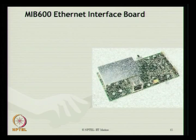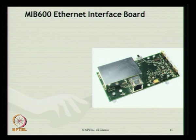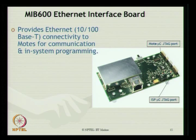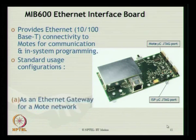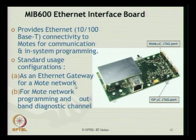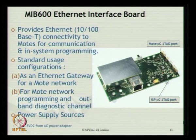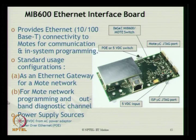The Ethernet interface board MIB 600 physically looks like this. It contains Ethernet 10/100 Base-T connectivity to motes for communication and in-system programming. It has a mote microcontroller JTAG port and an ISP microcontroller JTAG port both attached to the MIB 600. Standard usage configurations include an Ethernet gateway for the mote network or for mote network programming and out-of-band diagnostic channels. External power supply comes from 5 VDC from an AC power adapter, and power over Ethernet (PoE) switching is available on the board.